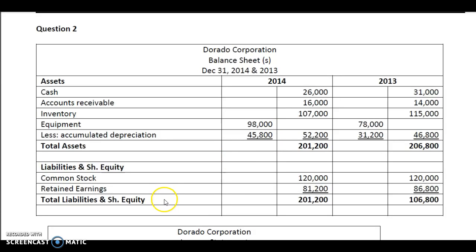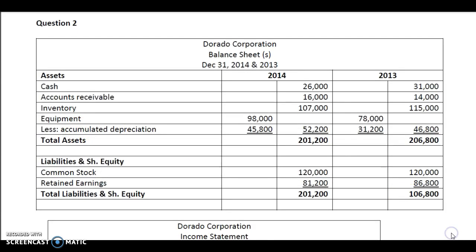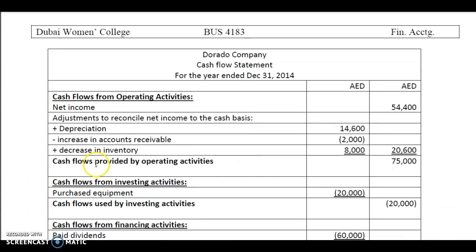Now let's take a look at the current liability. There is no current liability in the balance sheet. So we proceed to make the adjustments for current assets in the cash flow statement. A decrease in inventory will be added, while an increase in accounts receivable will be deducted as it decreases the cash flow. So 14,000 plus 8,000 minus 2,000 gives us 20,600. You add 20,600 with the net income 54,400.